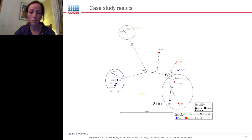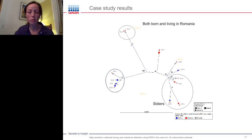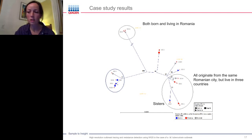From this SNP tree, we can see that isolates cluster in three groups. The top cluster contains isolates from patients originating from the same city in Romania — these were of VNTR genotype C from patients 12 and 13, both still living in Romania. The second cluster contains isolates from patients all originating from the same Romanian city but living in three different countries — among these, transmission likely occurred before migrating. Patients 3 and 6 are sisters and likely have a common source of transmission, as indicated by their epidemiological link.